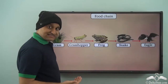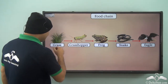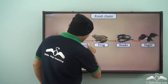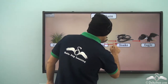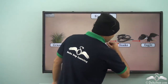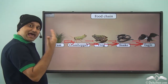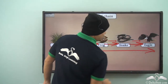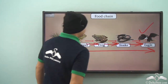Another example of a food chain: grass is eaten by the grasshopper, the grasshopper is eaten by the frog, the frog is eaten by the snake, and the snake is eaten by the eagle. So this is another example of a food chain in which the eagle is at the top.